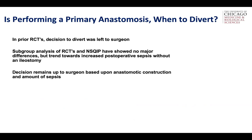When should you perform a diverting loop ileostomy if doing a primary anastomosis? This is a little less clear. In prior RCTs, the decision to divert was left to the surgeon. Subgroup analyses and multiple NSQIP analyses have shown no major differences in demographics or postoperative outcomes, but there is a trend toward increased postoperative sepsis without an ileostomy. There is likely significant selection bias. The decision remains up to the surgeon based on how the anastomosis comes together and the amount of sepsis present in the pelvis. If you're unsure, I would just divert — taking that diverting loop ileostomy down three or four months later is a relatively straightforward procedure.